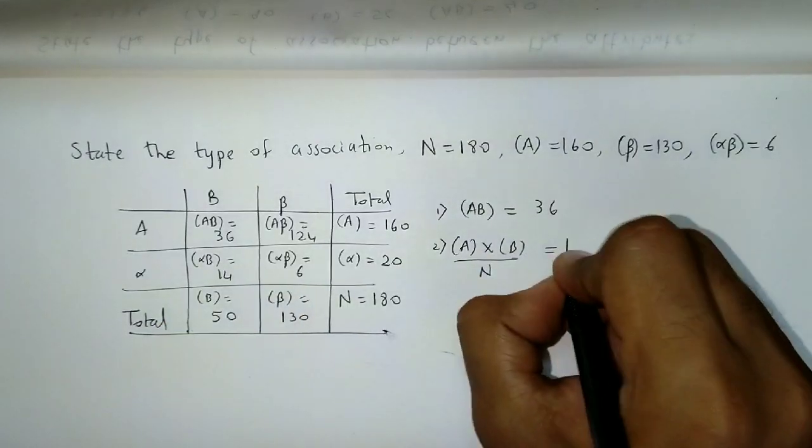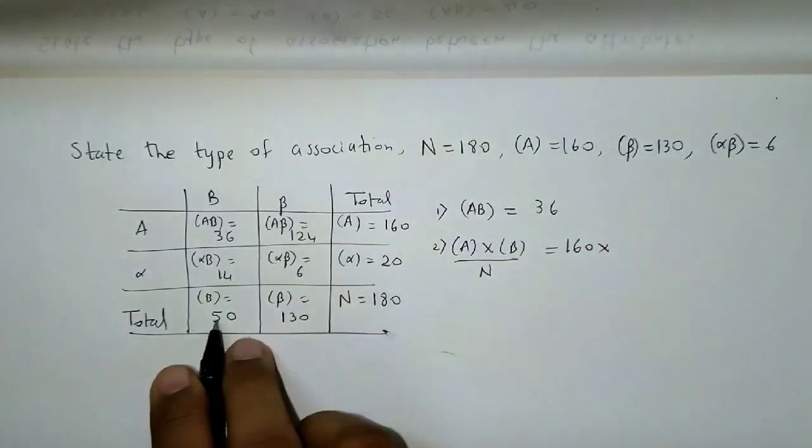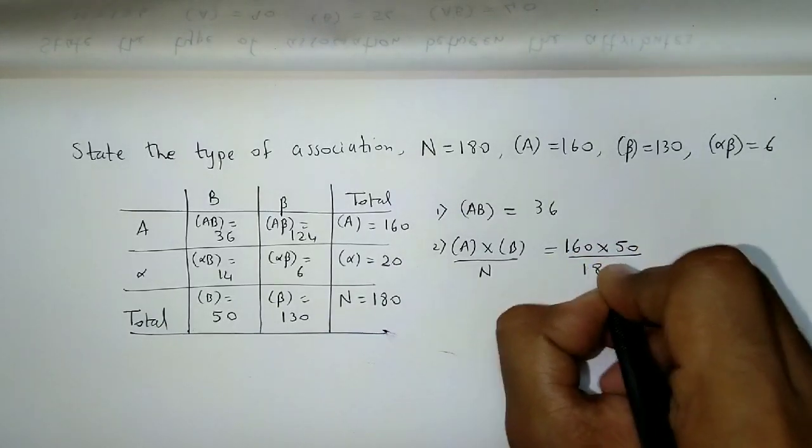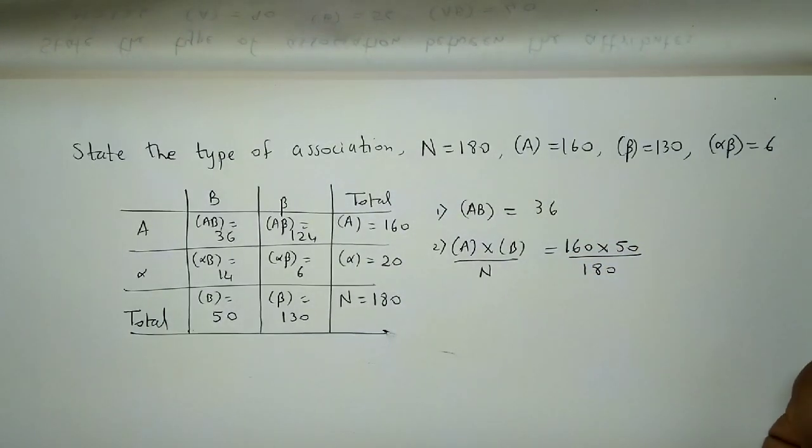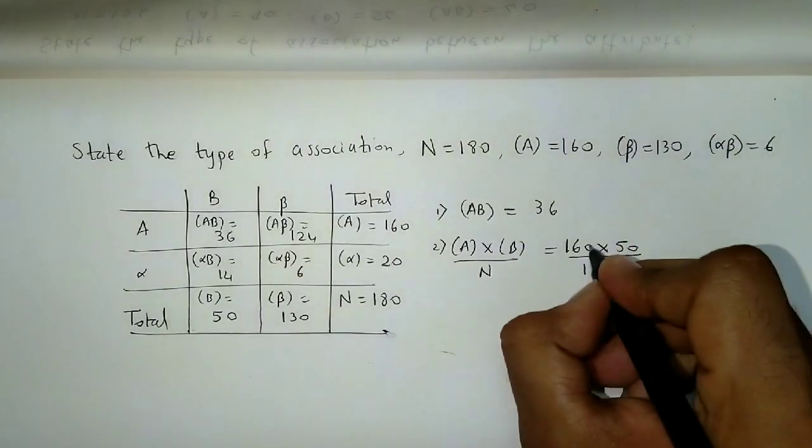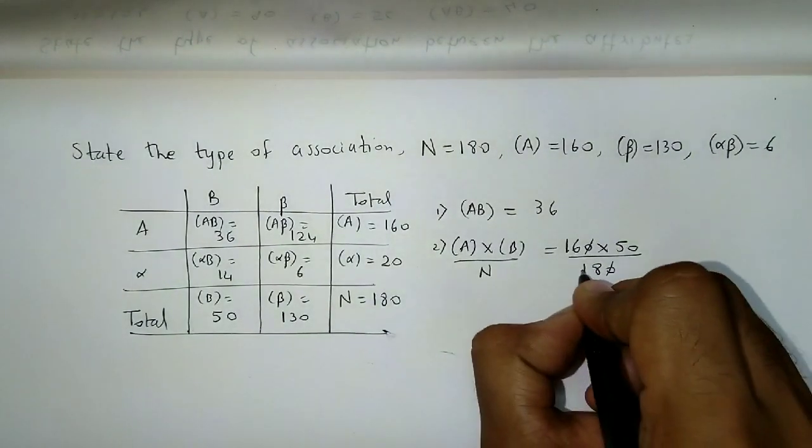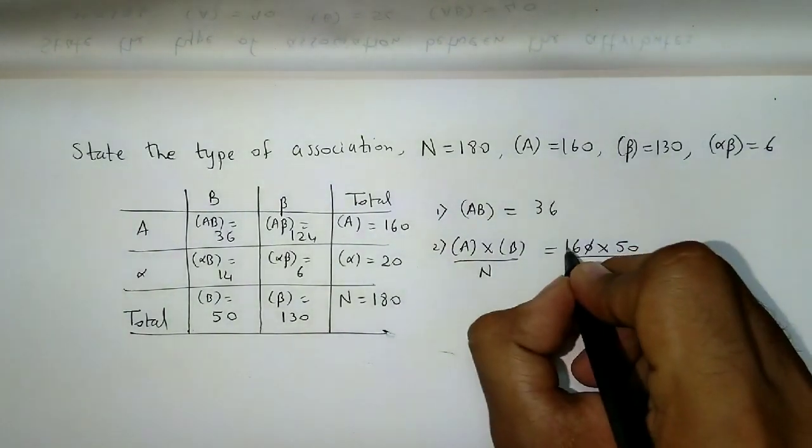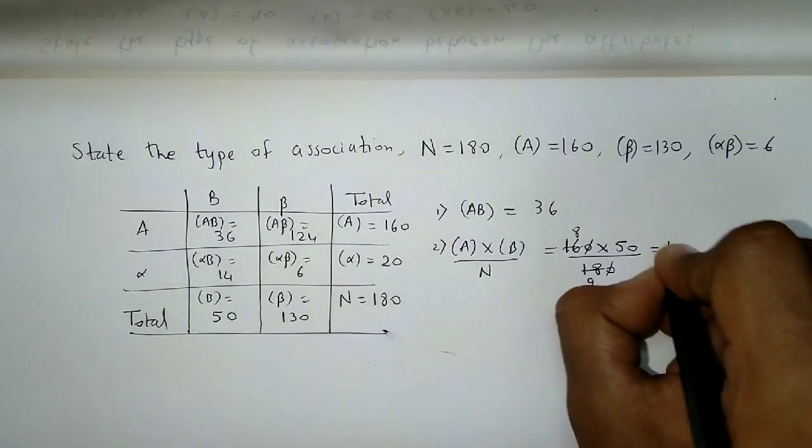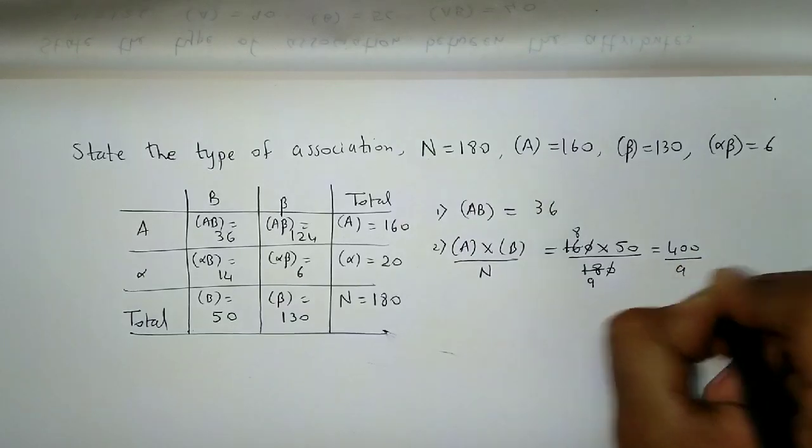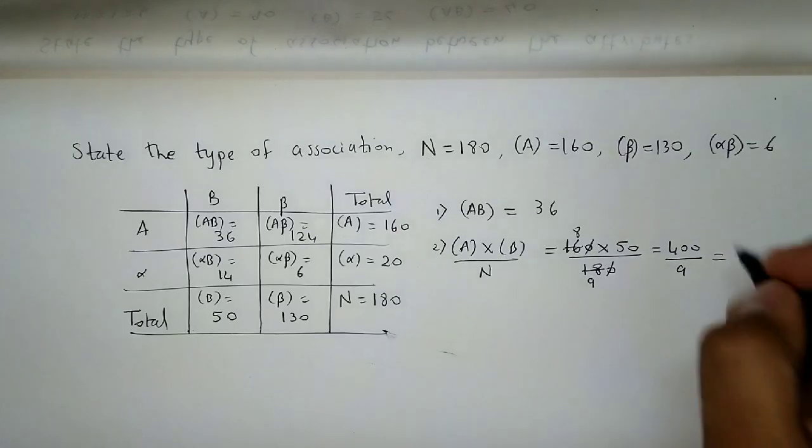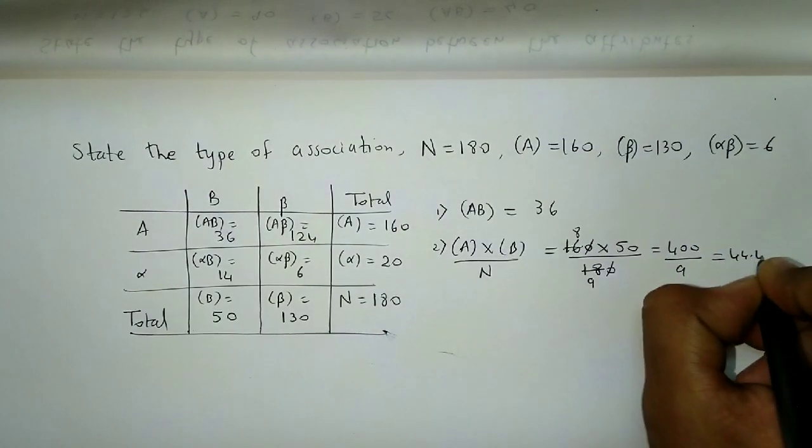Now, A frequency is 160. B frequency is 50. And N is 180. So, let's calculate this. Two nines, correct? Then two eights. This becomes 400 divided by 9. So, 400 divided by 9, you get 44.44.